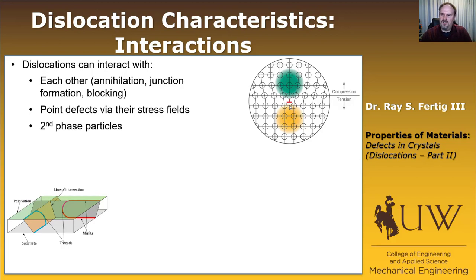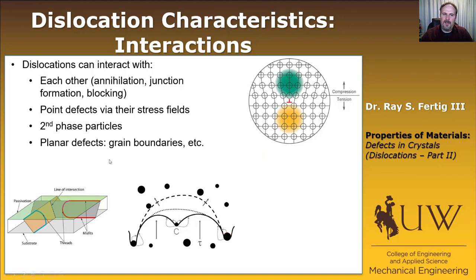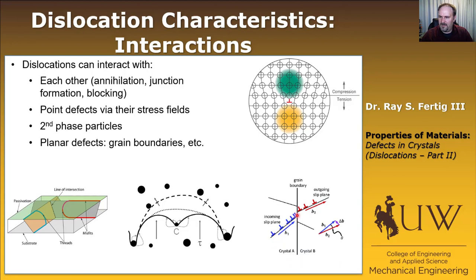The next type of interaction is with second phase particles — think of small inclusions added into a pure metal. The dislocations can't move through those particles in the same way they move through the lattice, so they effectively block the dislocation. The final type of interaction is with planar defects, most frequently grain boundaries and twin boundaries. Dislocations come to a grain boundary and are blocked — sometimes they can be retransmitted, but typically dislocations get blocked at grain boundaries.